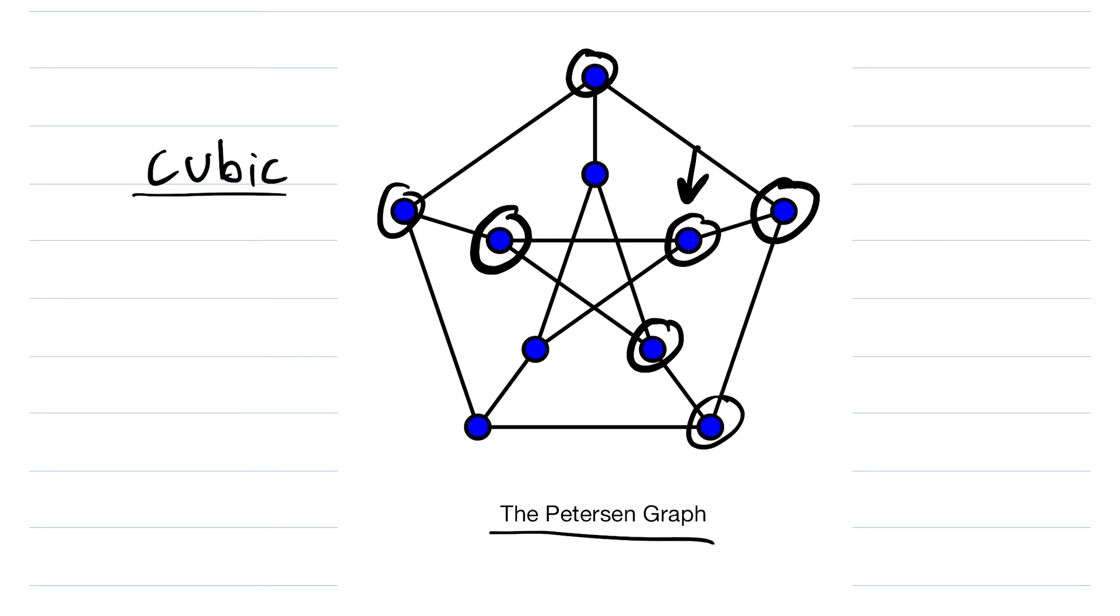And the Petersen graph is a pretty interesting graph for a number of reasons, but we'll get into more of those reasons in another lesson. But that's what a regular graph is. A graph is regular if and only if every vertex in the graph has the same degree.